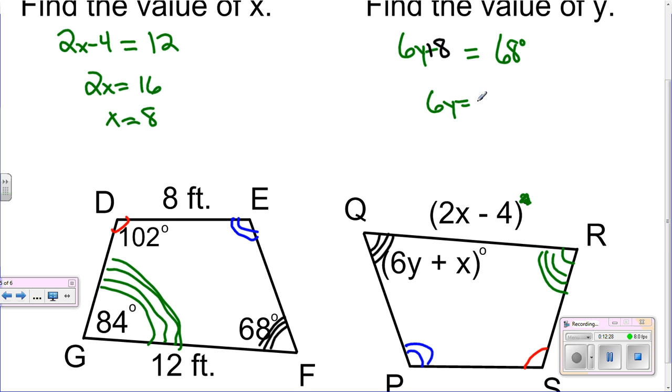Now you just solve for Y. 6Y equals 60 because we have to subtract 8 from both sides. Divide by 6, you get Y equals 10. And that's your solution to the question.